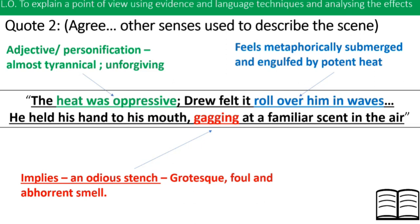So 'the heat was oppressive' — the adjective 'oppressive' is also personification because oppression is something humans do to one another. This portrays the heat as almost tyrannical and unforgiving. Where it says 'Drew felt it roll over him in waves,' heat doesn't literally roll over him — it's metaphorically submerging and engulfing him in the potent heat. 'Gagging at a familiar scent' implies an odious, grotesque, foul, abhorrent smell. So the writer is using the other senses — we can agree with that part of the statement.